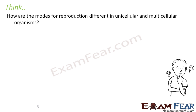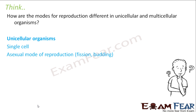How are the modes of reproduction different in unicellular and multicellular organisms? In unicellular organisms, they are made up of just one cell which performs all the different life processes — there are no specialized tissues or organs. So no sexual reproduction is possible because one cell cannot act as both a male and female sex cell simultaneously. That is why unicellular organisms have asexual modes of reproduction like fission and budding.